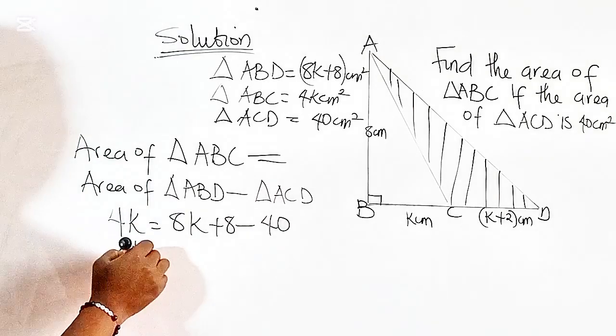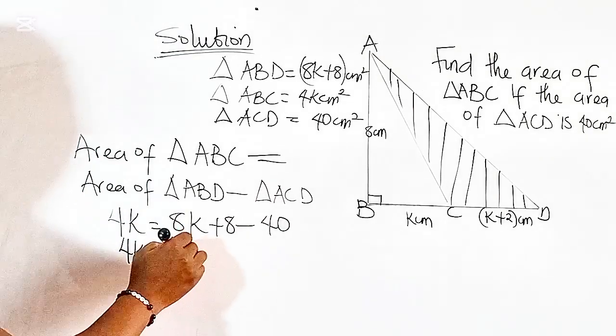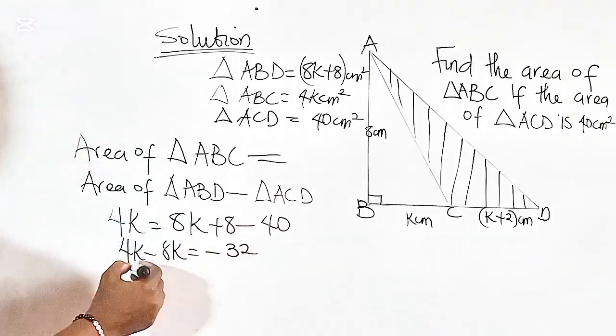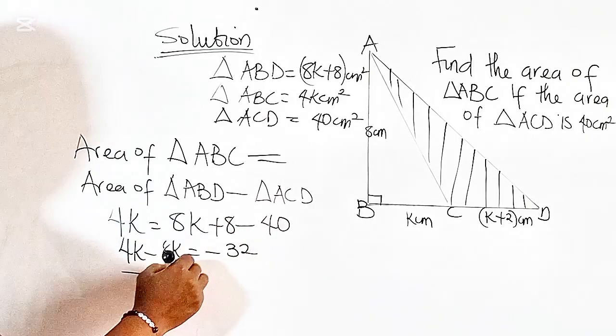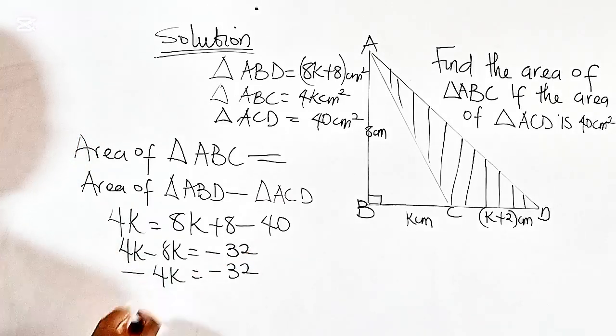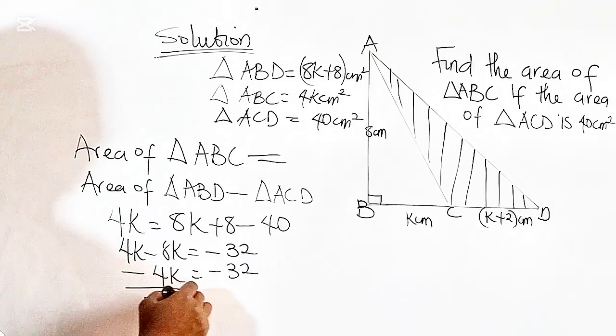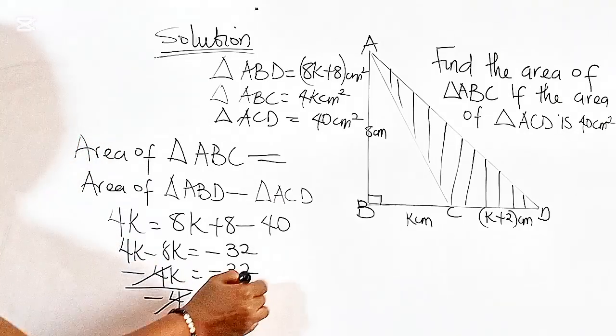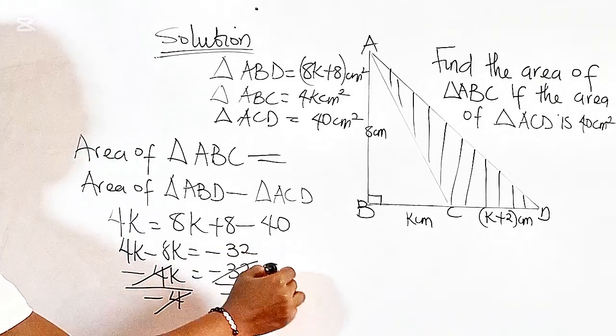We have 4K minus 8K is equal to minus 32. So this gives us minus 4K equals minus 32. We are going to divide both sides of this equation by minus 4. This we cancel out. Minus 4 will go into minus 32, 8 times.